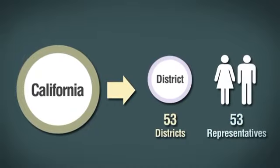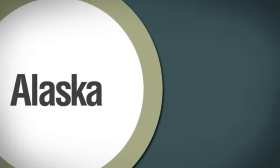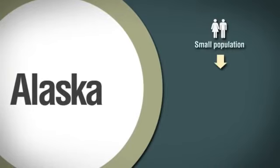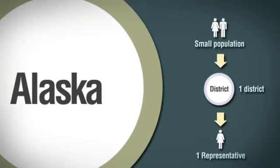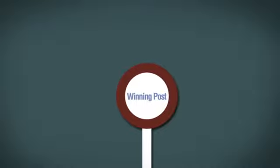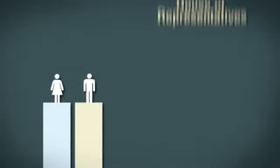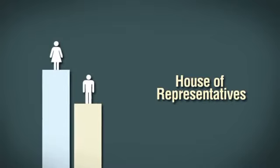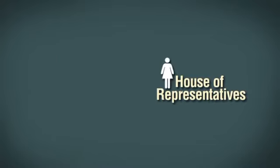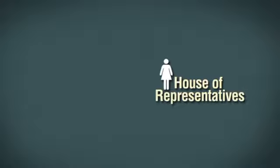California has 53 representatives. But Alaska, which is huge but has a really small population, only has one district, and therefore only one representative in the House. Like the UK House of Commons, the election system is first-past-the-post, so the candidate with the most votes in each district wins a seat in the House of Representatives. The party that wins a majority of seats in the House takes control.